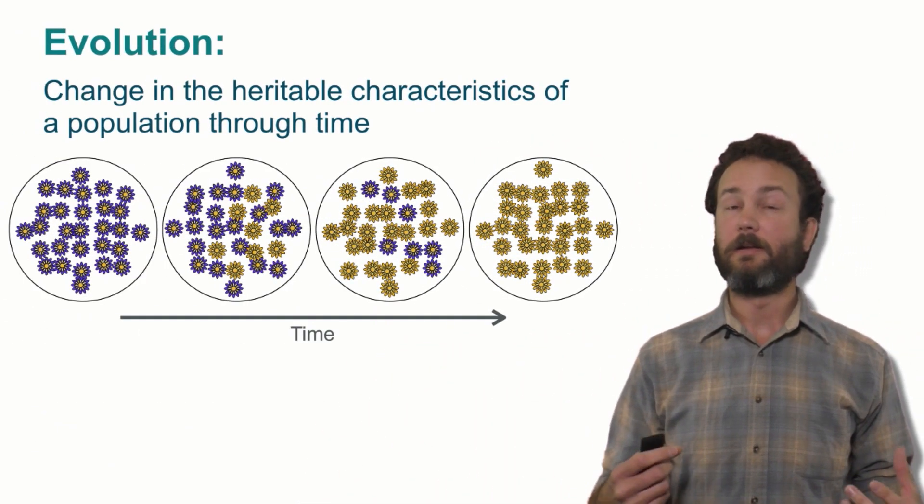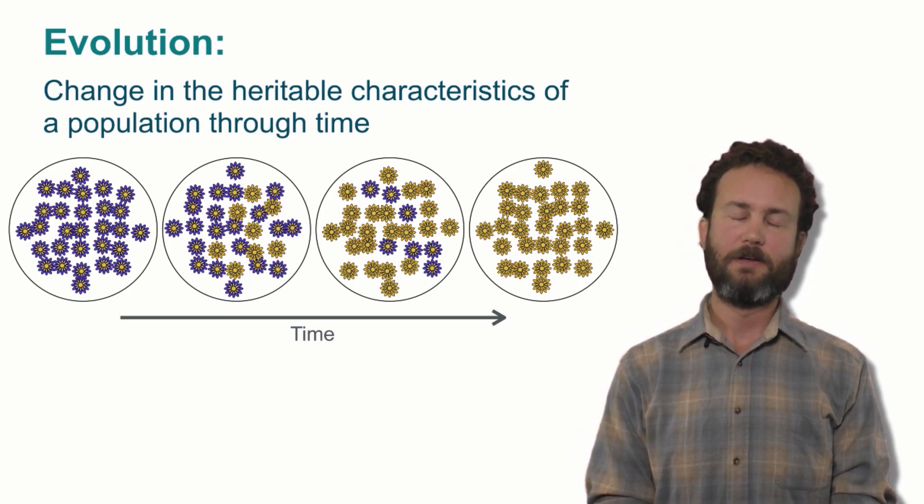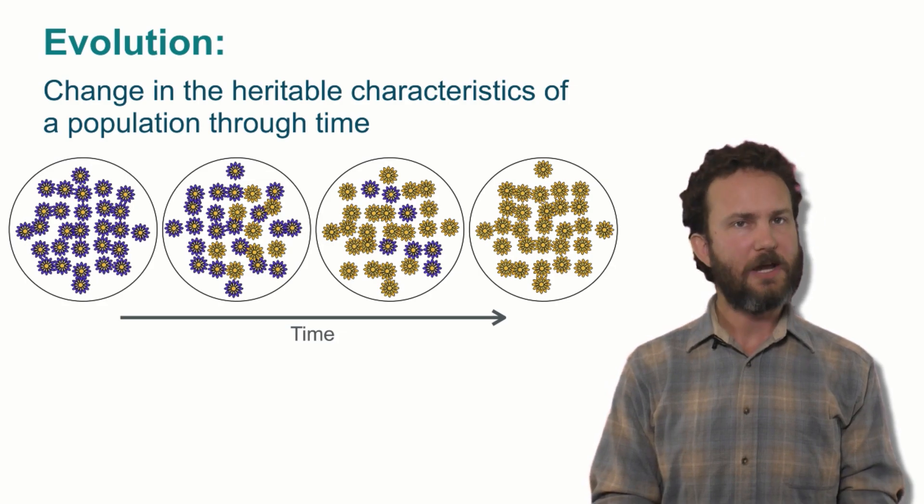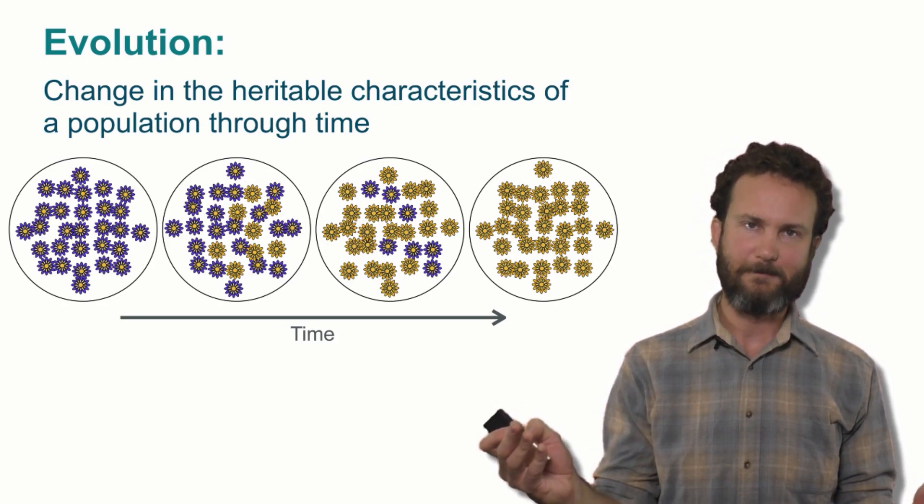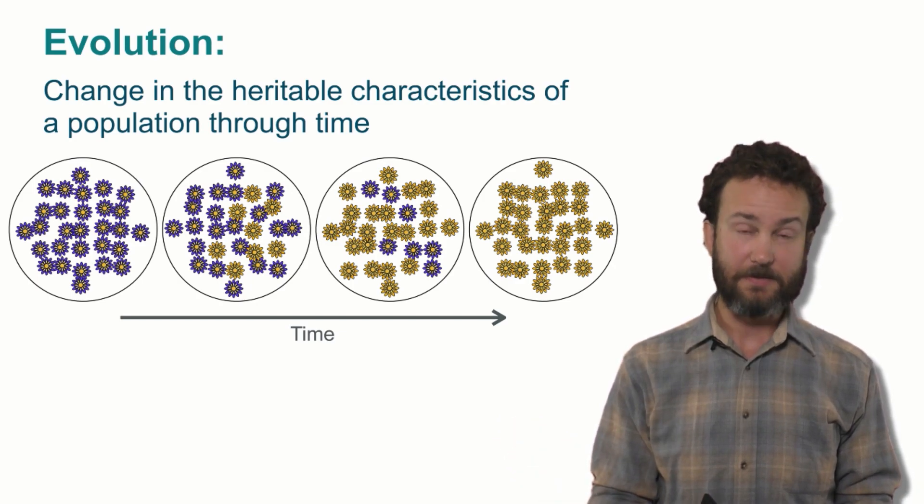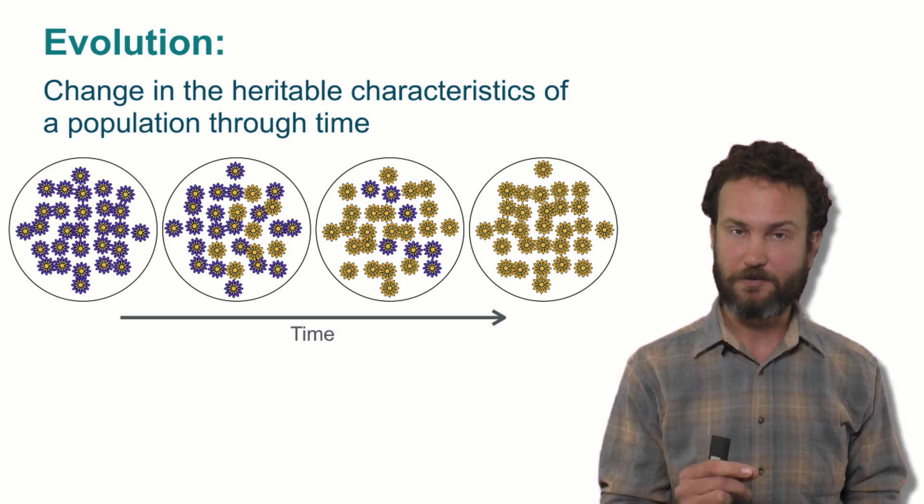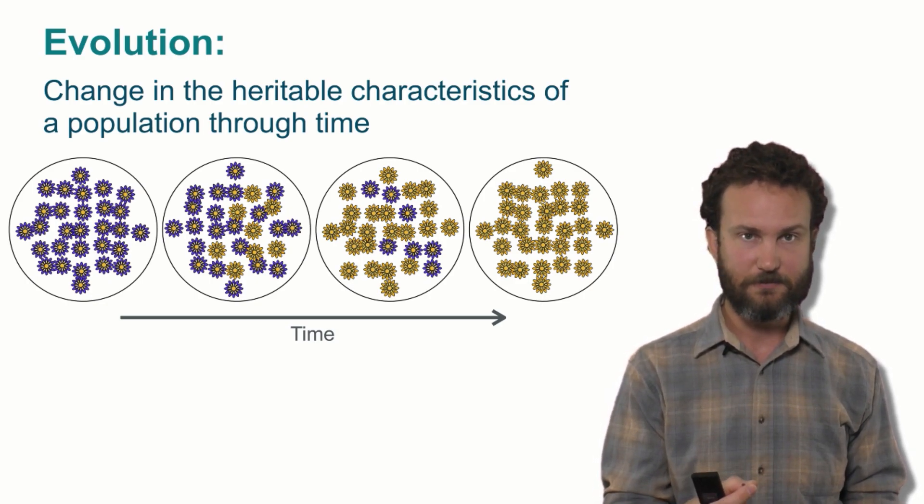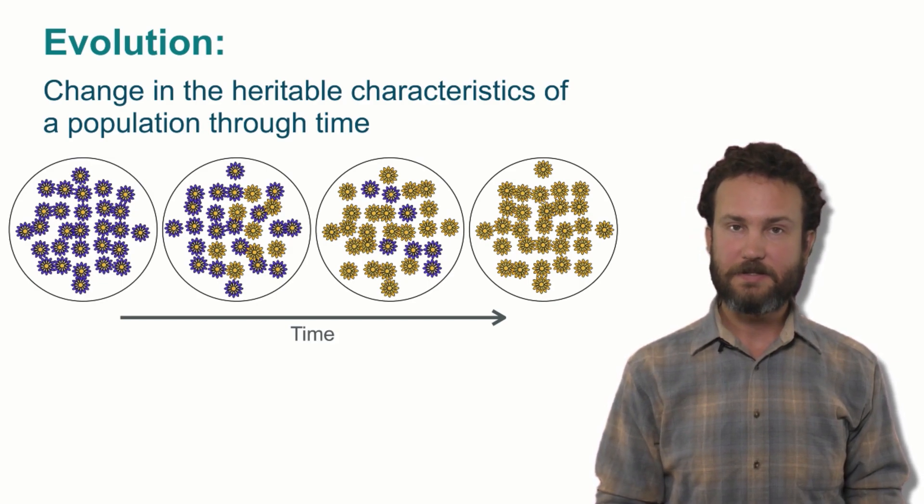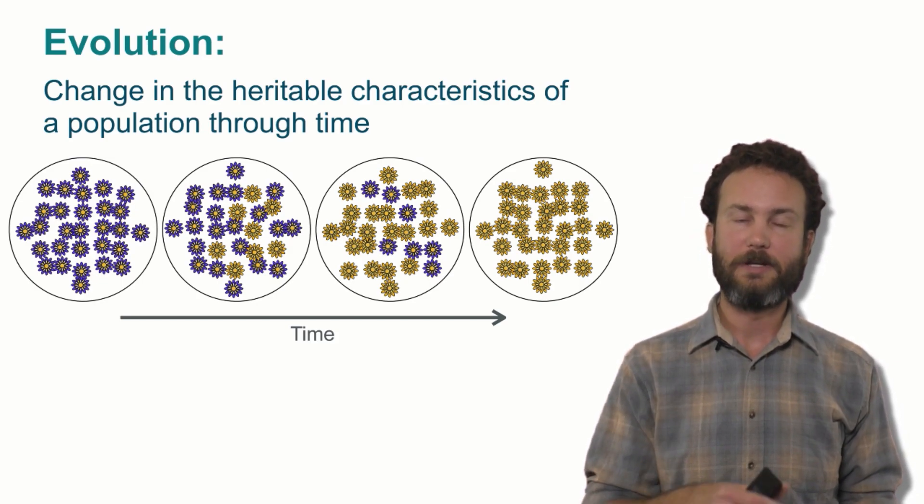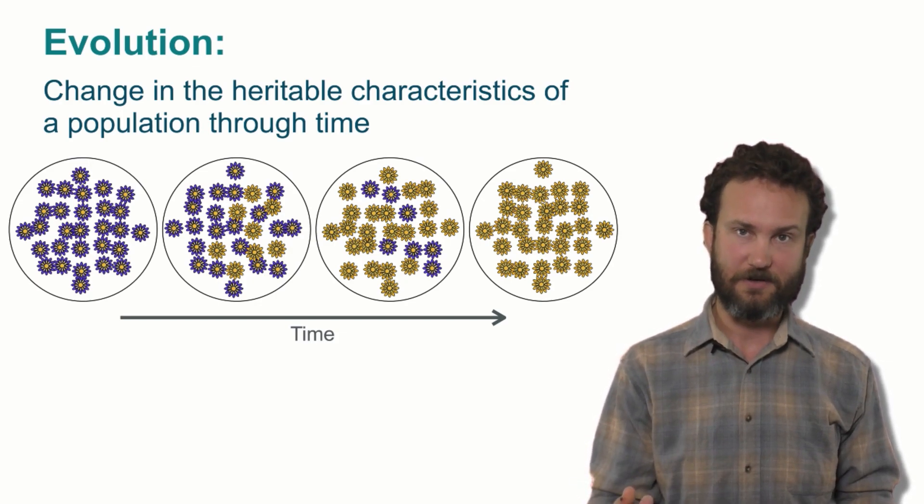First, we'll begin by getting a clear working definition of evolution. In the biological context, evolution is a change in the heritable characteristics of a population through time. It's important that this is at the population level, because change in a single individual through time is a different process—we call that development. And characteristics that evolve need to be heritable, because the process of inheritance allows evolution to act on those characteristics.